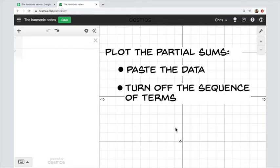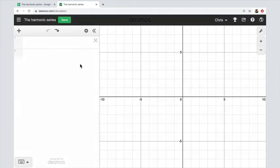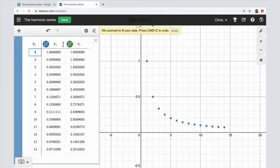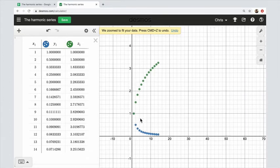You're going to turn off the sequence of terms if you're not really interested in those. Adjust the window to get a pretty picture. So here we go. You enter a cell and just paste, command V or control V as the case may be.